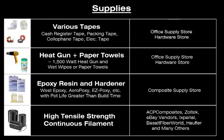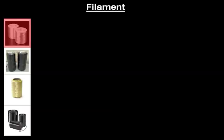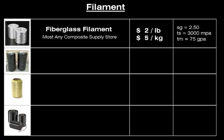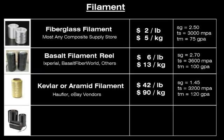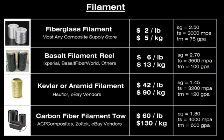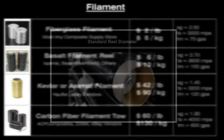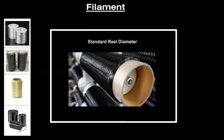All of these supplies are not included in the X-Winder kit. For the filament, you can use fiberglass, basalt, kevlar, aramid, carbon fiber, or other continuous filament materials. Fiberglass is the lowest cost per pound filament. Basalt filament is processed from volcanic rock and is slightly stronger than fiberglass, although a bit more costly. Kevlar and aramid filament is lighter and stronger than basalt, but also more costly. Carbon fiber filament tow is lighter and stronger than all other filaments. There are many types and grades of carbon fiber and prices can vary widely depending on the listed tensile strength. We purchased from ACP Composites, Zoltec, and several eBay vendors with good success. The reel holder on the X-Winder works best with reels that have a 3-inch inner diameter, which is generally a standard in the industry for continuous reeled filament materials.